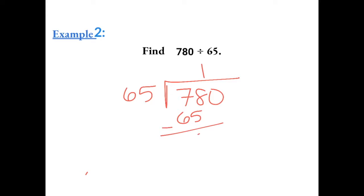Now we're going to subtract. We get 13. Now we're going to bring down the 0. 65 goes into 130 two times, which gives us 130, so we have no remainder. So the answer is 12.